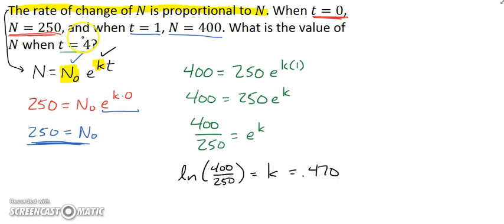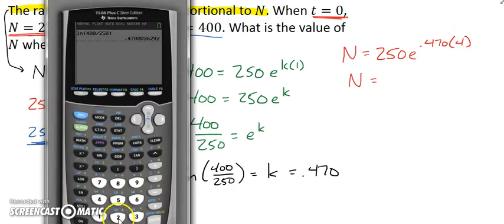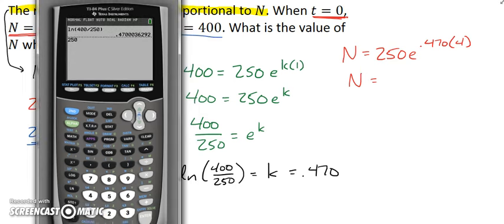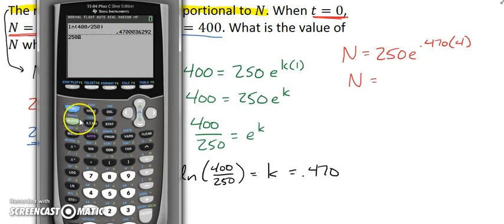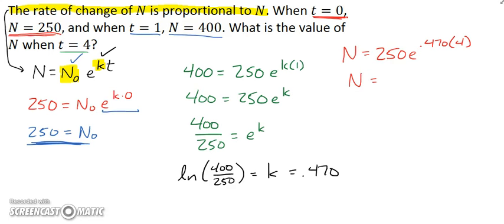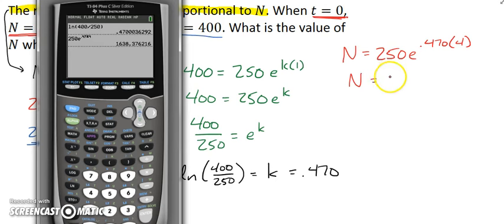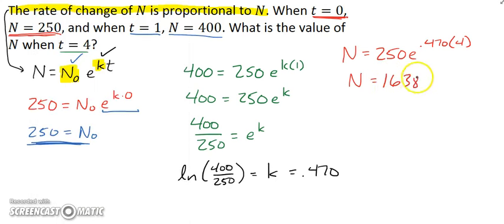So, I think I can finally answer their problem. When t is 4, all I have to do is put t here and I'm done. So, n would be, n sub 0 is 250. I've got e to the k is 0.470. And they want to know when t is 4, I can get that value for you. So, let's plug in 250. E is above ln, second in ln. We need e to the 0.470, which is 0.47, times 4. And I got a value of about 1638, 1638 point, we'll go 376. There you have it. You have a few that work out like this. It's probably a good time to try those now.